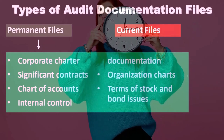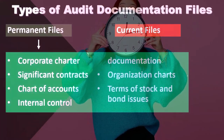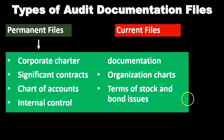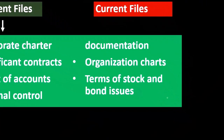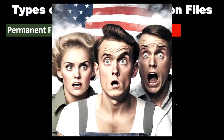Organizational charts are typically something with a longer lifespan because we're thinking of upper management of the organization. Terms of stock and bonds issued would also go in the permanent file. When we think about the current file, we're thinking about those types of things that are going to happen in the current period — those items that change each year.